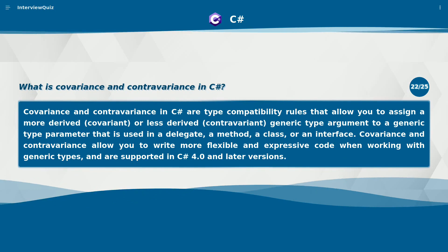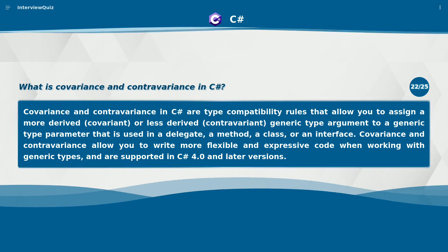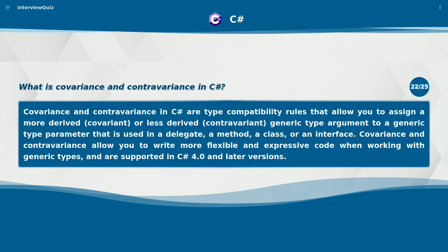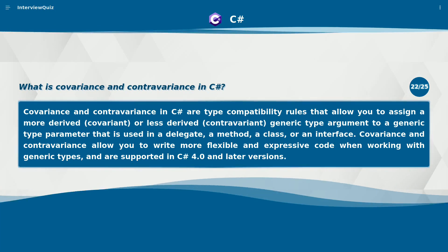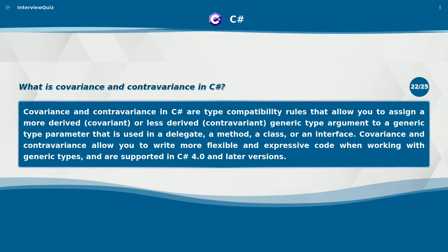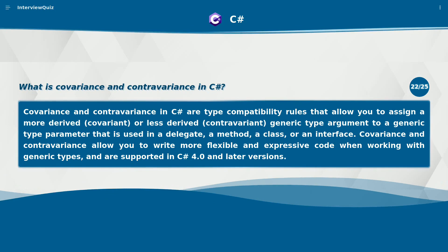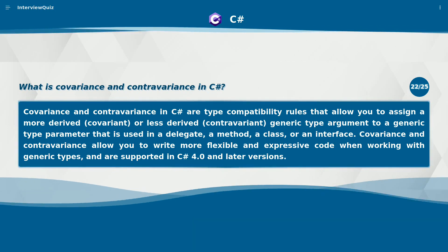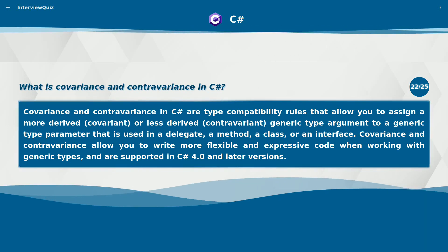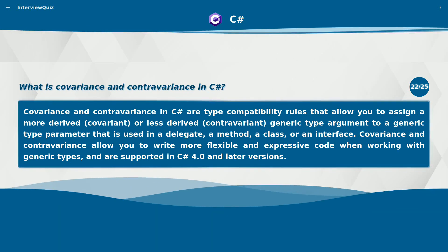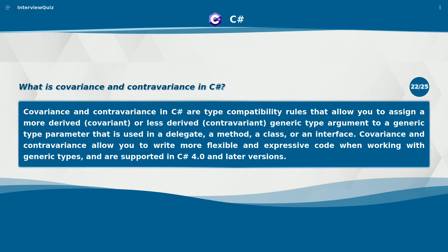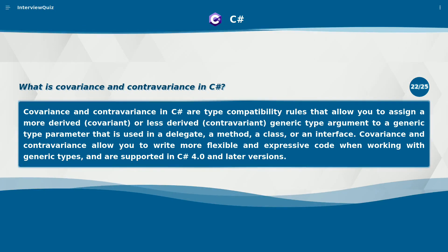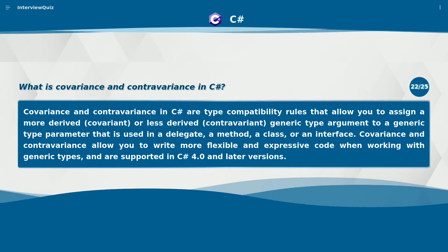What is covariance and contravariance in C#? Covariance and contravariance in C# are type compatibility rules that allow you to assign a more derived (covariant) or less derived (contravariant) generic type argument to a generic type parameter that is used in a delegate, a method, a class, or an interface. Covariance and contravariance allow you to write more flexible and expressive code when working with generic types and are supported in C# 4.0 and later versions.